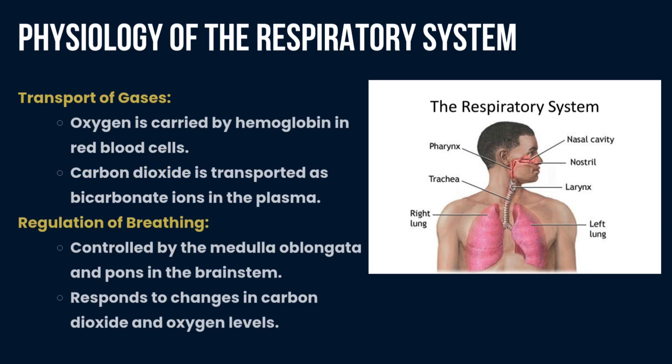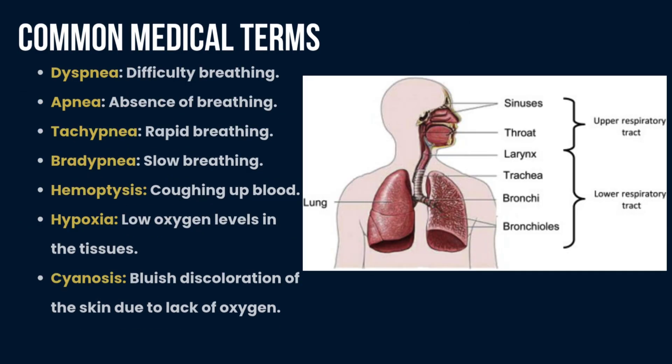Gas exchange then takes place in the alveoli. For transport of gases, oxygen is carried by hemoglobin in red blood cells, while carbon dioxide is transported as bicarbonate ions in the plasma. Finally, the regulation of breathing is controlled by the medulla oblongata and pons in the brainstem, which respond to changes in carbon dioxide and oxygen levels.